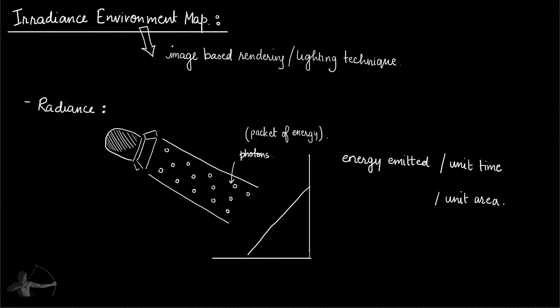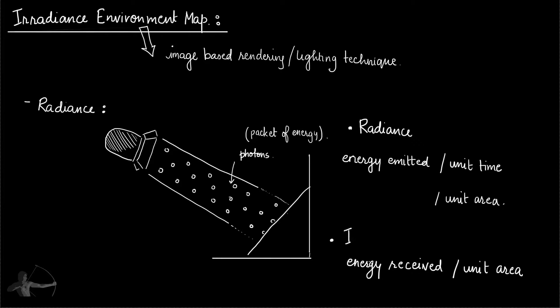Think of a very high wattage light: if it emits heat and energy, and the light becomes bigger, the amount of heat emitted increases, and the longer the light stays on the more energy is produced. So radiance is the energy emitted per unit time in a given direction from a per unit area. Similarly, a surface will receive this light energy, and the energy received per unit area is irradiance.